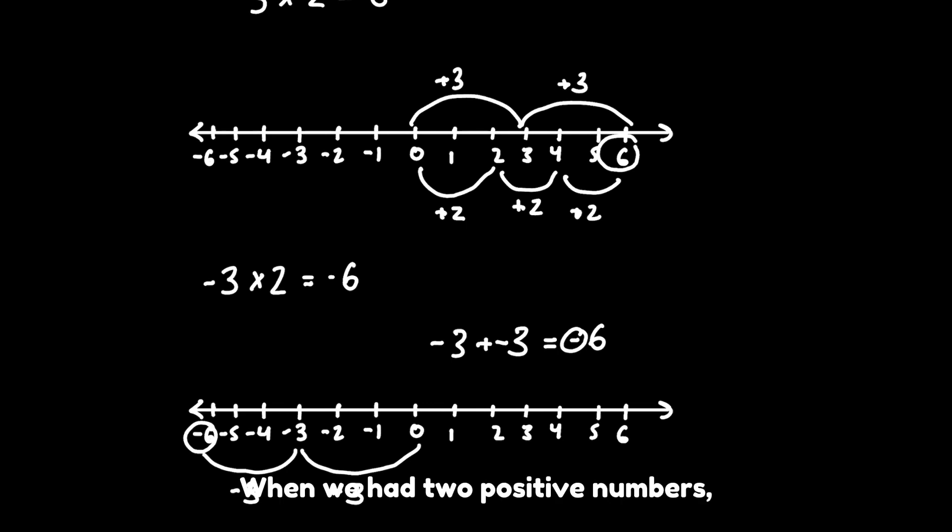When we add two positive numbers, the answer was on the right side. But when adding a negative, the answer was on the left side. It seems obvious, but it's clear that the negative causes the number to switch sides. So what happens when we add another negative number?